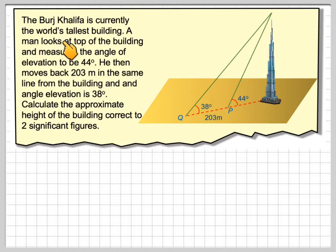The Burj Khalifa is currently the world's tallest building. A man looks at the top of the building and measures the angle of elevation to be 44 degrees. He then moves back 203 meters in the same line from the building and the angle of elevation is 38 degrees. Calculate the approximate height of the building correct to two significant figures.